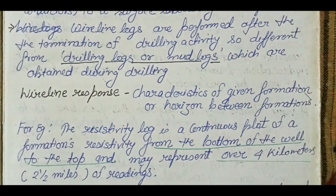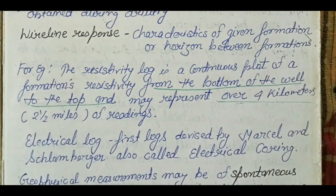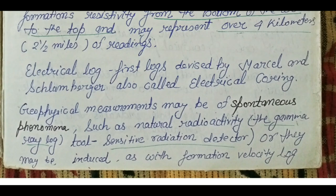From the wire line response we can determine characteristics of the formation — such as resistivity, density, and sonic velocity. For example, the resistivity log is a continuous plot of formation resistivity from the bottom to the top of the well, and it may represent over four kilometers. The electrical log was the first log derived by Schlumberger and is also called the electrical survey.